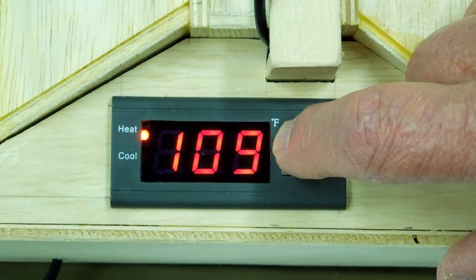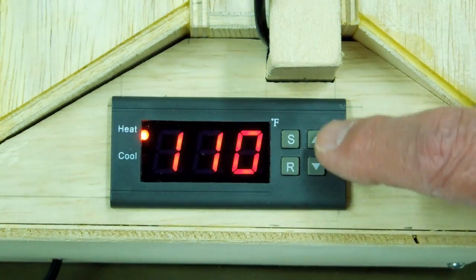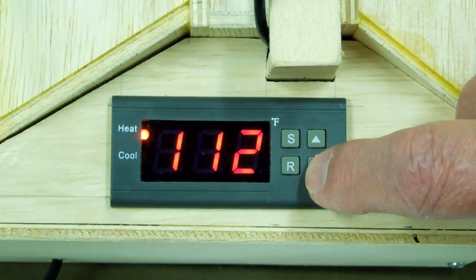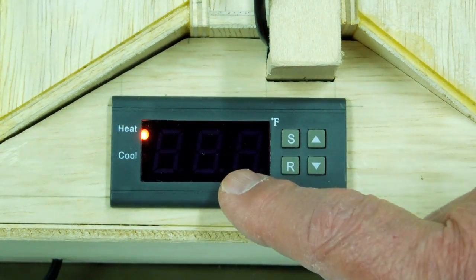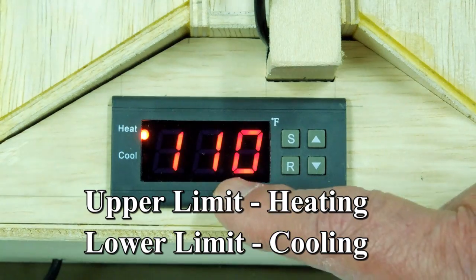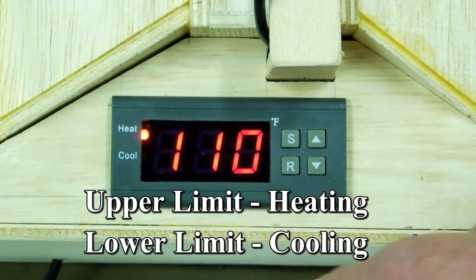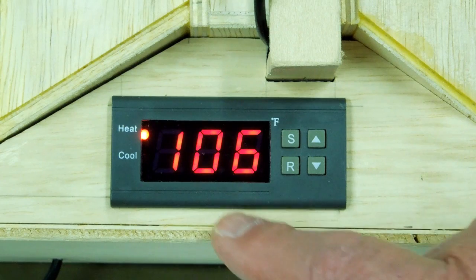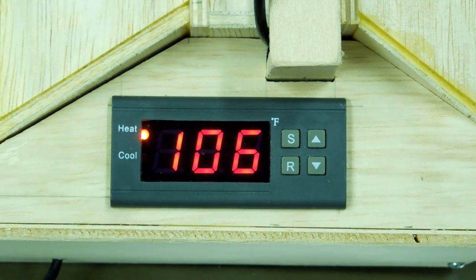If you just press S and let go of it, this will start flashing. And you can increase or decrease the set temperature or the upper limit for the controller. Press that again and it'll come back and now it's indicating the temperature that the probe is actually seeing.